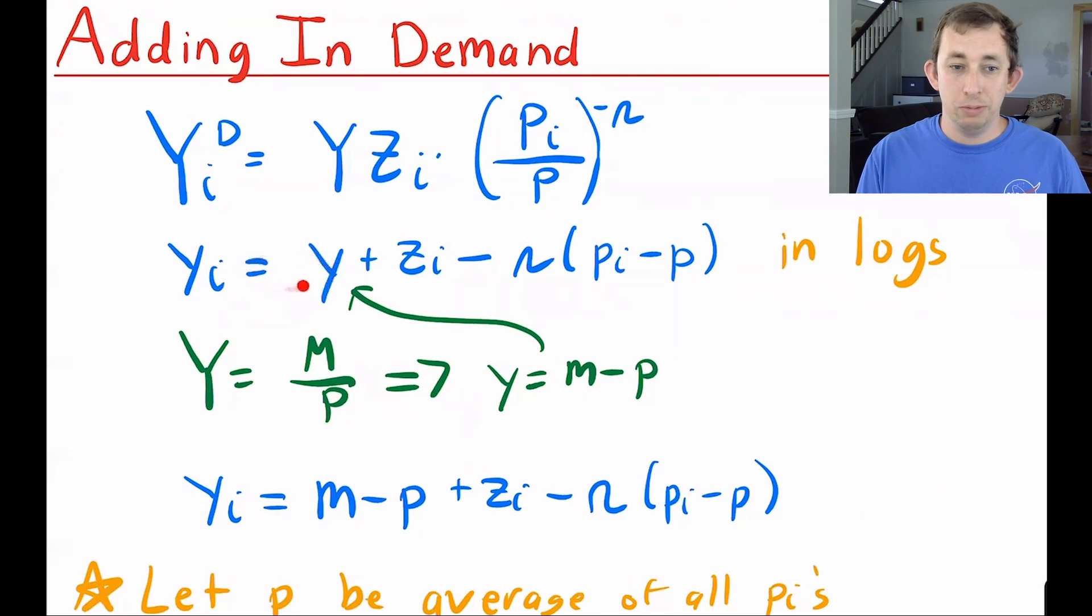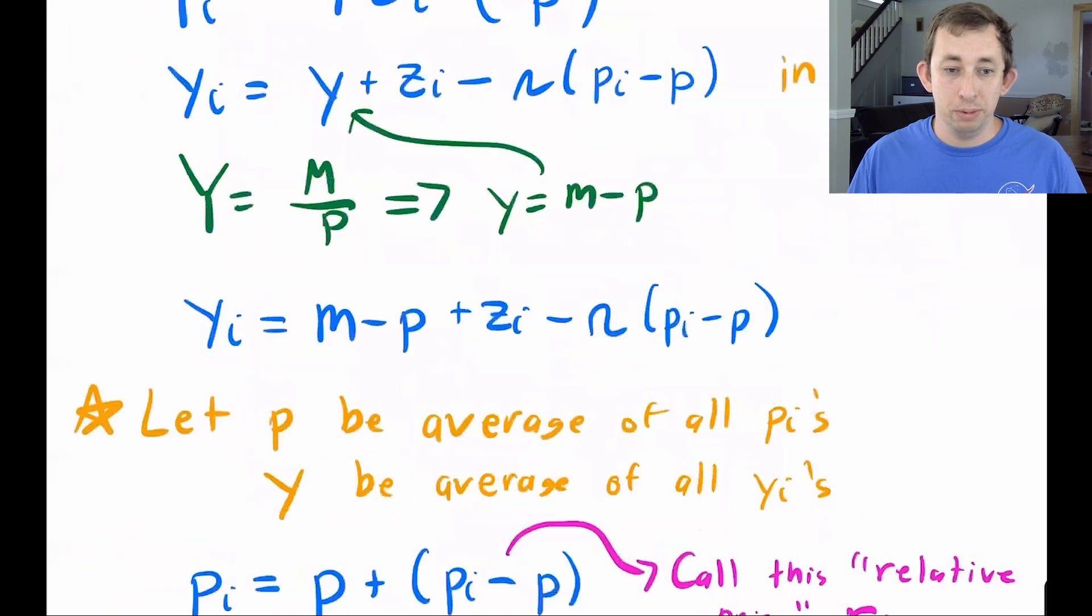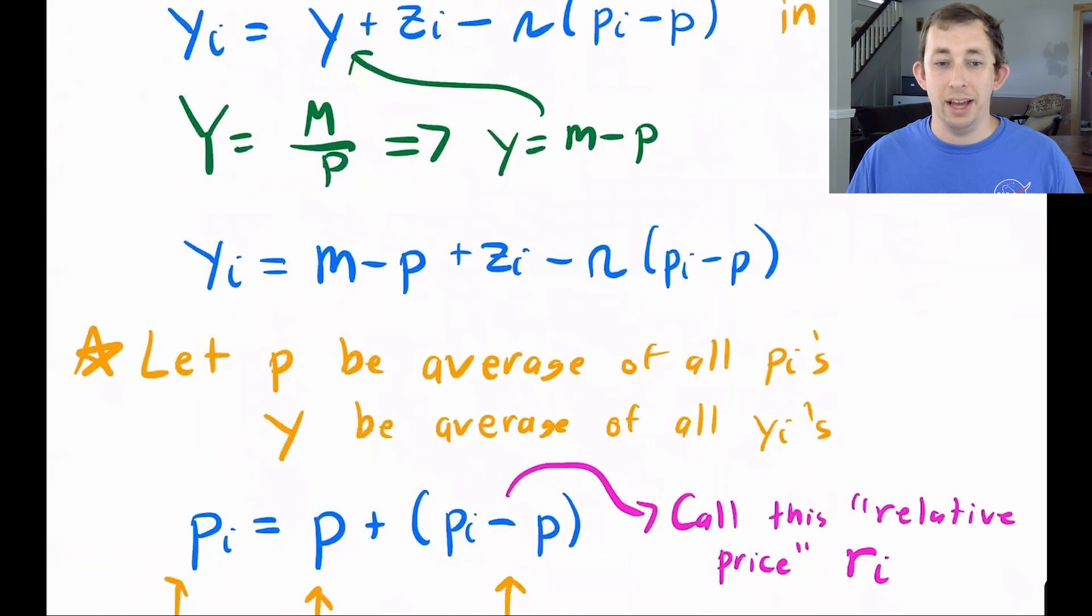So again, we're taking some logs. And here is that same equation in log form. I also know as a fundamental identity that overall output is equal to m over p, which means I can take the log of that equation, get little y equals m minus p and plug that in for y here. So I've done that to get to this blue equation. So now y equals m minus p plus zi minus the elasticity of demand times pi minus p.